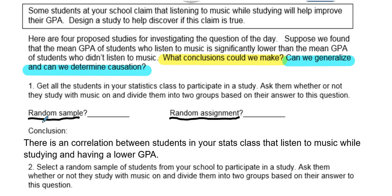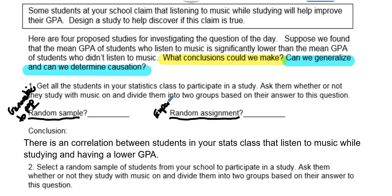Whenever we do any type of random sampling, we can generalize to the population, or whatever we're getting a random sample from. Random assignment refers to experiments, and that gives us cause and effect.